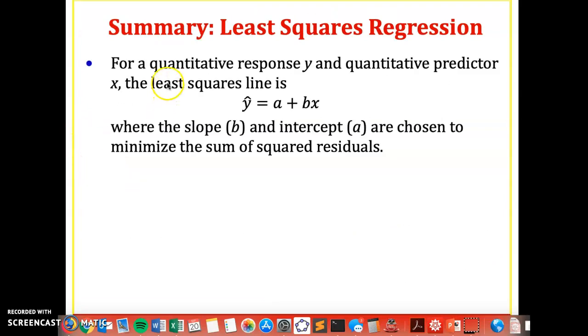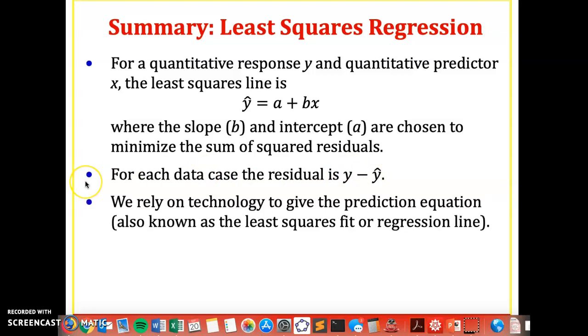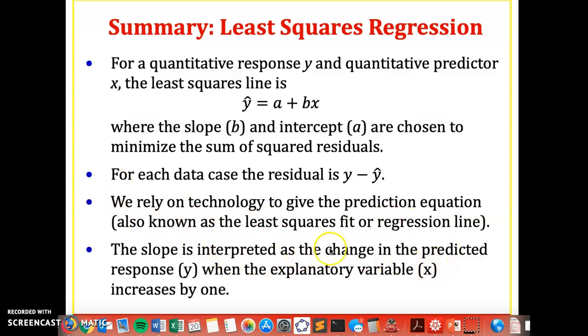Okay, as a summary, for quantitative response and quantitative predictor value x, the least squares line is y-hat equals a plus bx. Don't forget, in this form, b is the slope and a is the intercept. And these are chosen, I should say these are calculated with software, using calculus and linear algebra to minimize the sum of squared residuals. For our class, you're going to be getting these values with technology. For each data case, for each data point we know, the residual is the observed minus the expected. We rely on technology to give the prediction equation, also known as the least squares fit or regression line. And the slope is interpreted as the change in predicted response when the explanatory variable increases by one. And keep in mind there's nothing in here about causation, it's the predicted change.